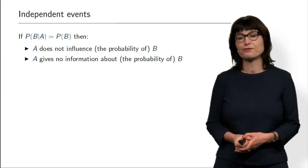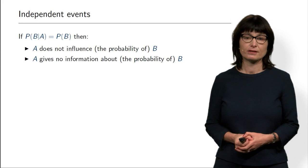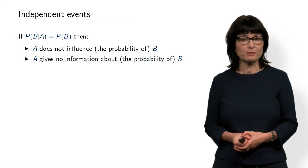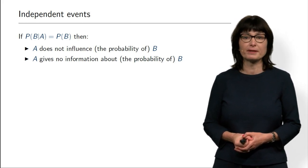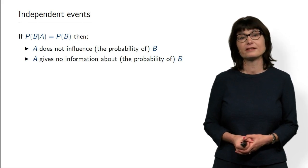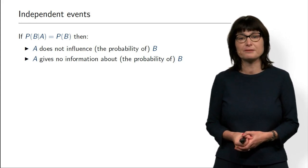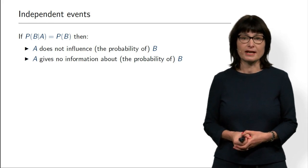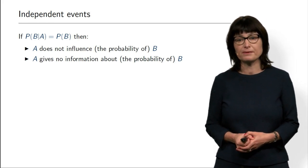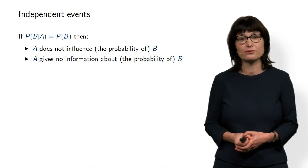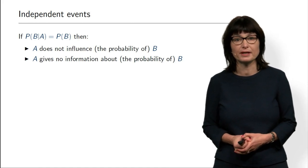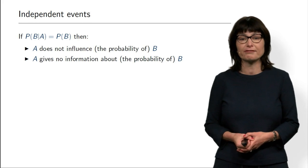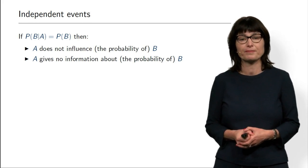When is this a good model? For example, assume that A and B are failures of two different machines. If these are completely different machines from completely different suppliers in two completely different production lines, then it is very fair to assume they are independent. However, if these two machines are in the same production line, from the same supplier, or use the same software, then events A and B can become dependent, because failure of A will tell something about failure of B.